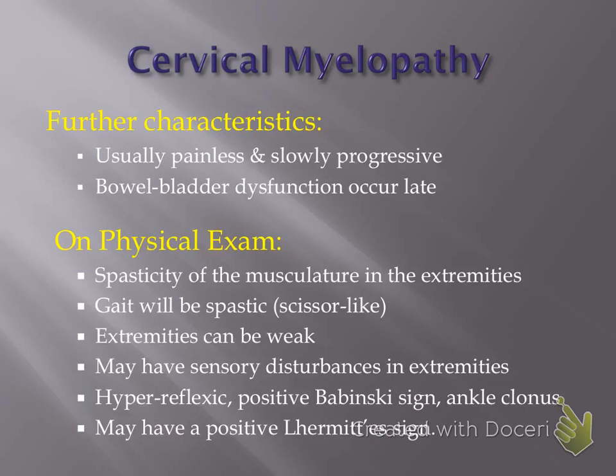Cervical myelopathy is usually slowly progressive, though it can be sudden onset — for example, if a patient has a whiplash injury and a massive herniated disc in the neck causing spinal cord compression. Due to degenerative changes alone, it'll be slowly progressing. With severe cases or cases that have progressed slowly over years, the patient can have bowel and bladder dysfunction — they'll start dribbling urine, have difficulty emptying the bladder completely, and might even have episodes of bowel incontinence.